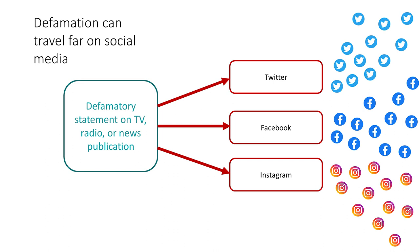For example, Fox News' defamatory broadcasts about Dominion Voting Systems first appeared on the cable news network, but later were posted on Fox News' accounts on social media, including Facebook, Instagram, and Twitter, where they were additionally viewed tens of millions of times and then further shared by third parties.